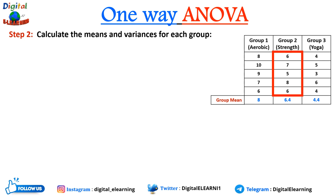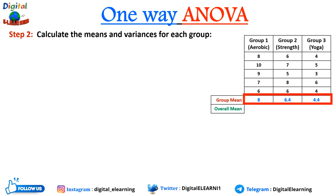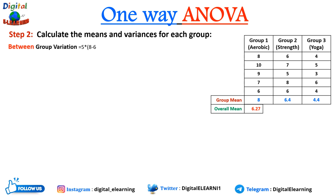For group 2, the mean comes to 6.4, and for group 3 it comes to 4.4. We also need to calculate the overall mean, which is the average of all values across all groups, and it comes to 6.27. Next we need to calculate the between-group variation.